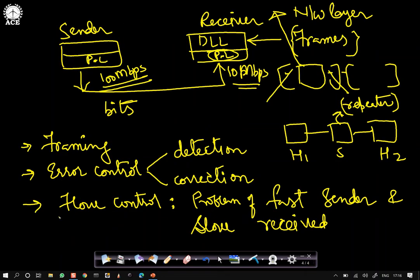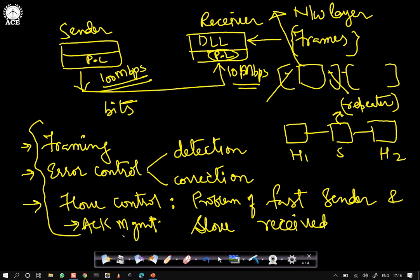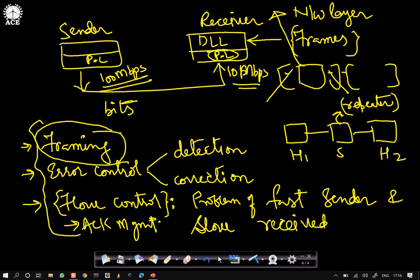In summary, the important functions of the data link layer include framing, error control, flow control, and acknowledgement management. Flow control is also a function at the transport layer, as we will see later. Flow control is a problem arising due to a fast sender and slow receiver. In the next video, I will start my discussion with the first important function called framing — a simple yet important topic.